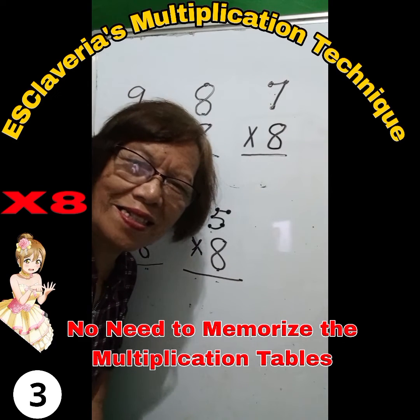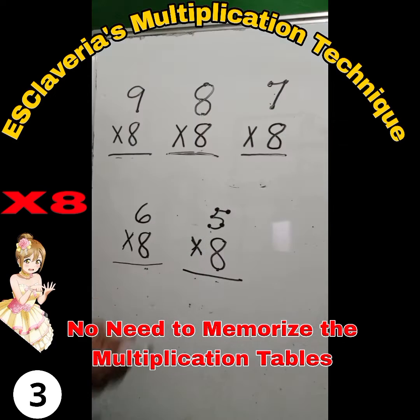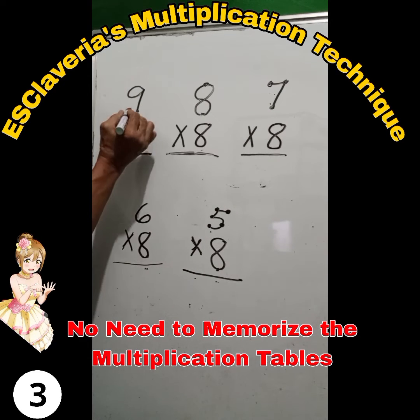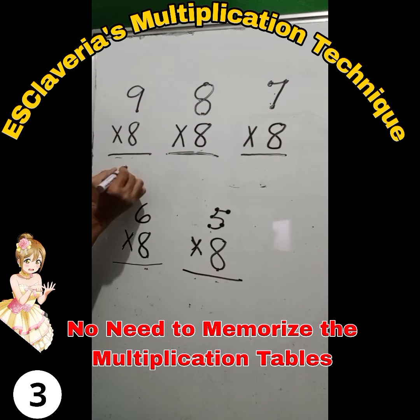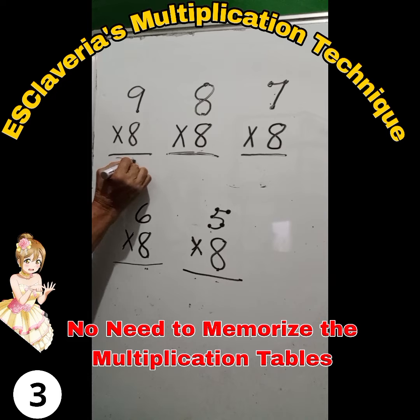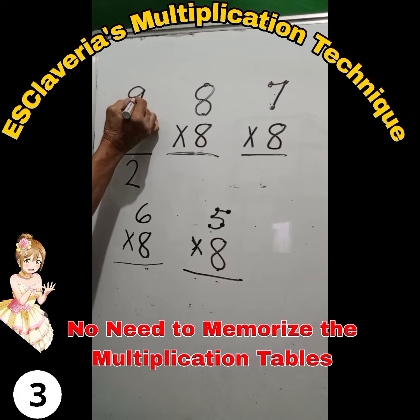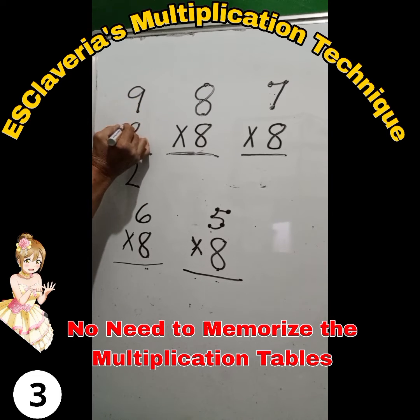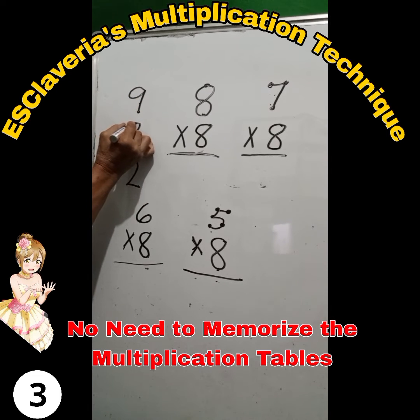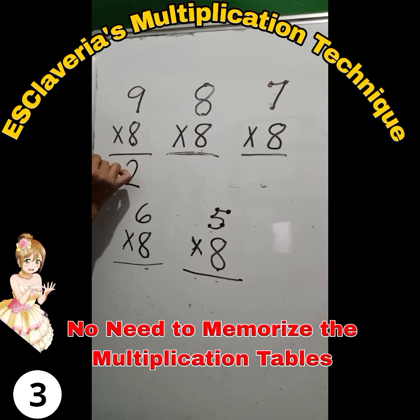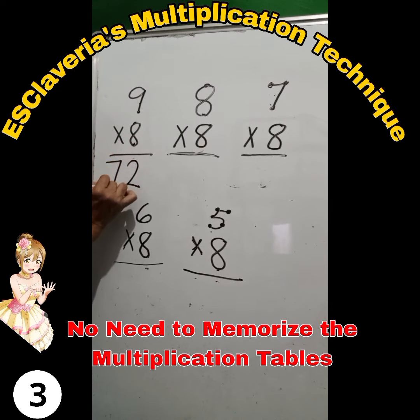The multiplier is 8. Again, let's count: 2. Write 2 below 8. Read 9 and go downward: 9, 8, 7. And the answer is 72.